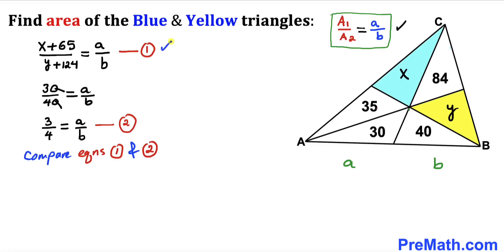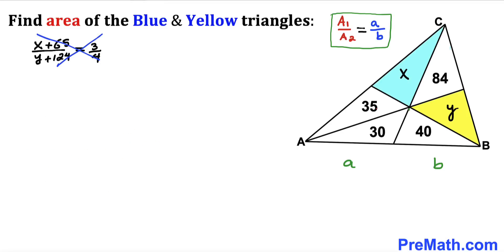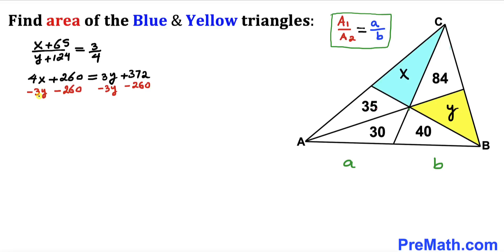Comparing equations 1 and 2, both right-hand sides equal a/b, so we equate the left-hand sides: (x + 65) / (y + 124) = 3 / 4. Cross-multiplying gives 4x + 260 = 3y + 372. Subtracting 260 and 3y from both sides, we arrive at 4x − 3y = 112. This is equation 3.